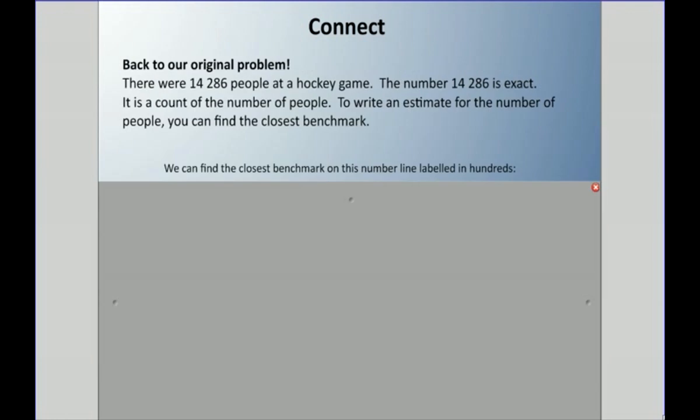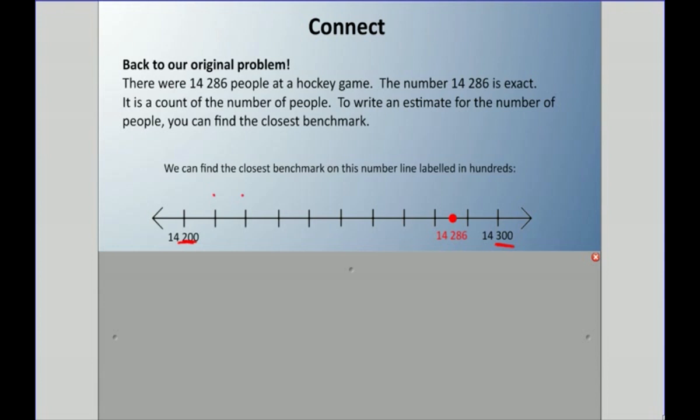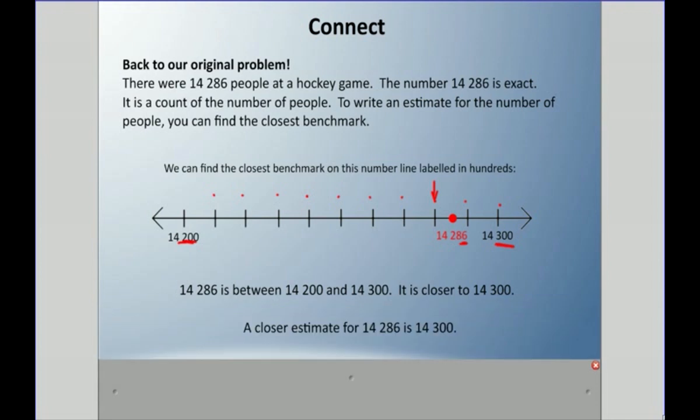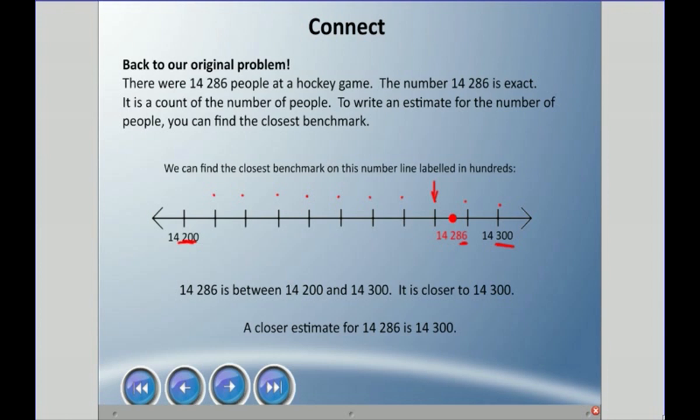Let's go back to our original problem of the hockey game. This time we are going to use a number line that's labeled in the hundreds. We have 14,200 and 14,300, so this is a space of 100. If I count, there's 10 lines. Well, 10 tens make 100, so each one of these lines is a 10. If this is 14,200, this is the eighth line, so the 80, and it's slightly over halfway because that's six. So 14,286 is between 14,200 and 14,300, but it is closer to 14,300. We could say an estimate for that number is 14,300.